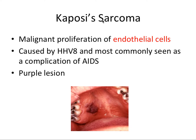Next, we have Kaposi's sarcoma, which is the malignant proliferation of endothelial cells. Endothelium is what lines the inside of various organs, including the blood and lymphatic vessels. It's caused by human herpes virus 8, and most commonly seen as a complication of AIDS.